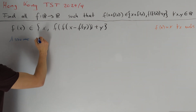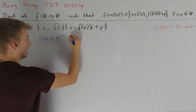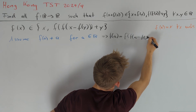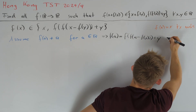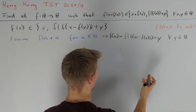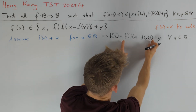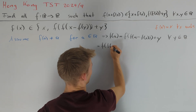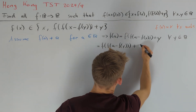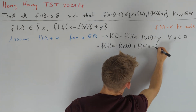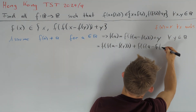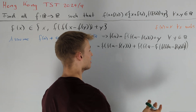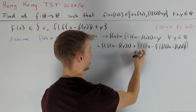Assume that f(a) ≠ a for some a in R. We directly get that f(a) must equal f(f(a)) - f(y) + y for all y in R. This implies the right-hand side is a constant function of y, so it's a good idea to plug in f(f(a)) - f(y) for y to get: this equals f(f(a) - f(y)), and adding f(f(f(f(a)) - f(y))). Although the second term looks ugly, we can cancel the first and get that f is bijective.